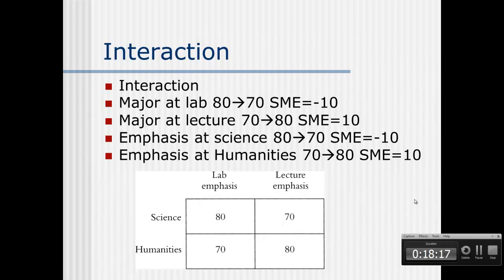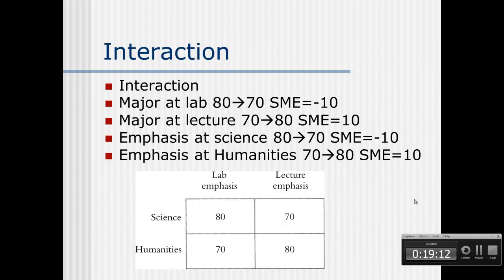We can verify this using the other pair of simple main effects. The simple main effect of course emphasis at the science level: going from 80 (lab) to 70 (lecture) is minus 10. The simple main effect of emphasis at the humanities level: going from 70 (lab) to 80 (lecture) is plus 10. Do the simple main effects of emphasis change at different levels of major? Yes — the direction changes from negative to positive, confirming there is an interaction here.